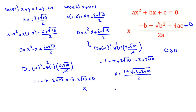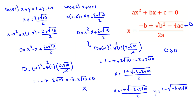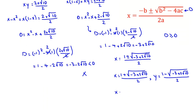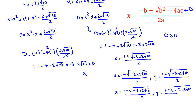So we have two answers. The first: x equals 1 plus square root of negative 3 plus 2 root 10, over 2, and y equals 1 minus square root of negative 3 plus 2 root 10, over 2. The second: x equals 1 minus square root of negative 3 plus 2 root 10, over 2, and y equals 1 plus square root of negative 3 plus 2 root 10, over 2. So we have two answers here.